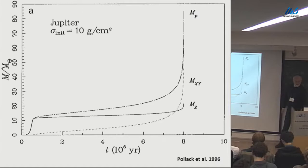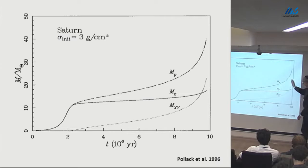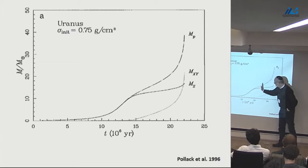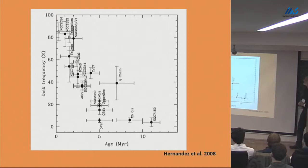How long does it take? It takes about 8 million years — that sounds fine. Saturn takes off a little bit more slowly because the surface density in the background of solids is lower, so it takes a little bit longer, but less than 10 million years. Uranus takes a little bit longer, and maybe things stopped partway through, giving a core and a little bit of atmosphere. Have we solved the timescale problem? The answer is I don't think so.